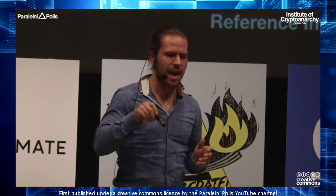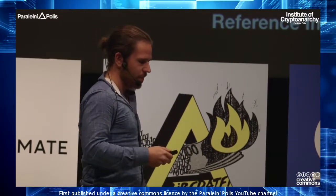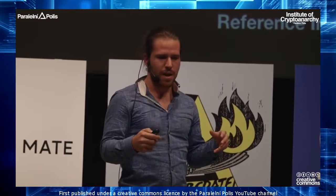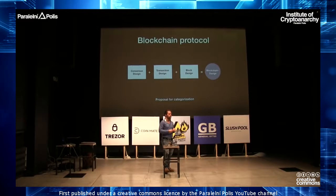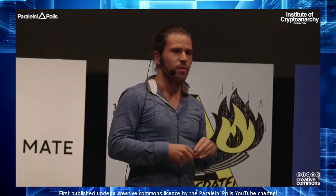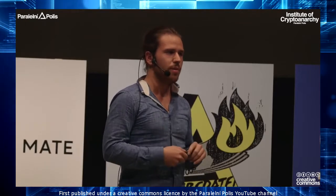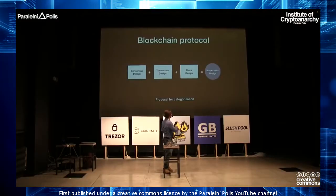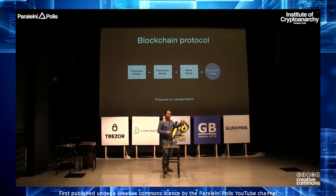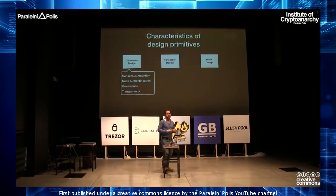So how can I hack the blockchain? I was trying to make sense out of all this, and I'm hereby proposing a standard to categorize blockchain. It looks kind of like this: there is a consensus design, transaction design, and a block design, and those make up the blockchain design. Each of those primitives — those design primitives — have some subcategories, some specifications. And defining how you put those parameters determines whether an attack vector will work or will not work. For consensus design, you've got a consensus algorithm — proof of work, proof of stake, proof of authority, whatever.